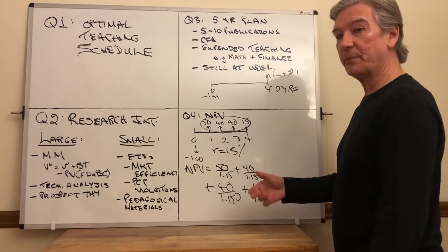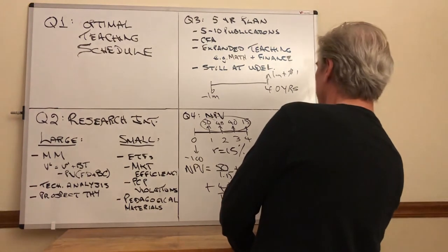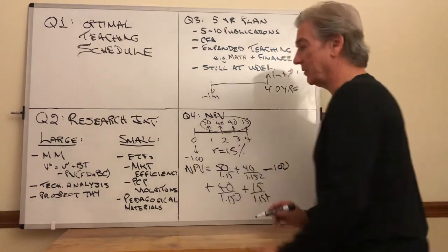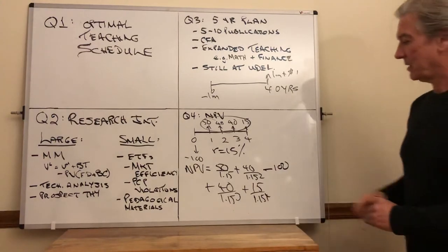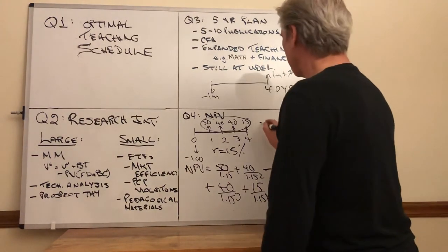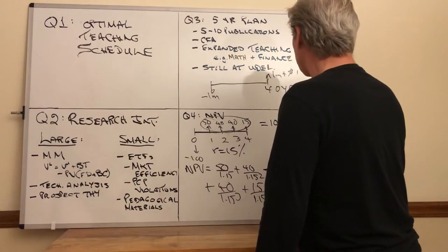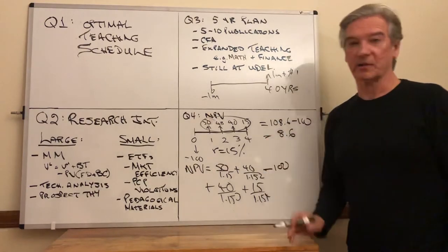But if it's net present value, you must be subtracting something. So minus 100. So we have a value and a cost. This is equal to 108.6 minus 100 equals 8.6.